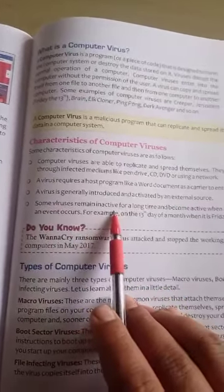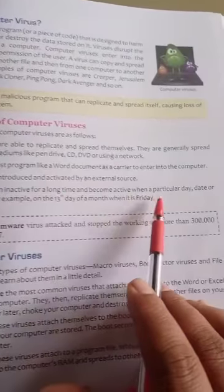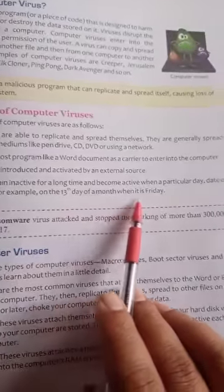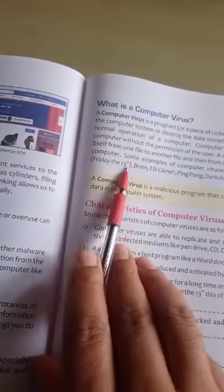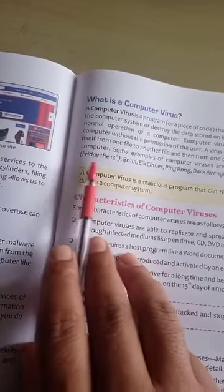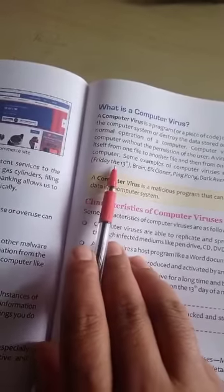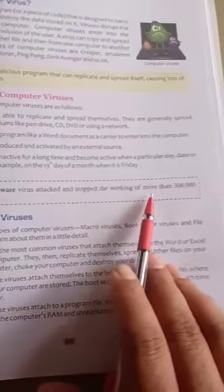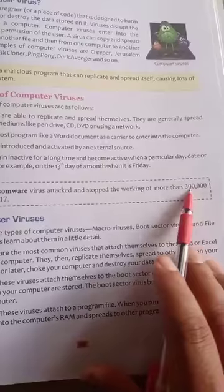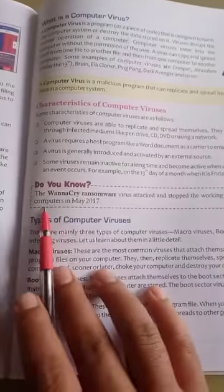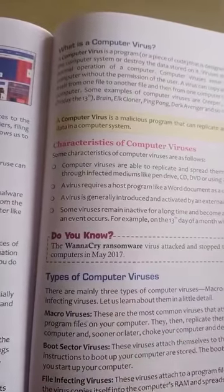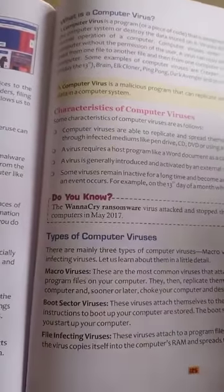A virus is generally introduced and activated by an external source. Some viruses remain inactive for a long time and become active when a particular date or event occurs — for example, the Friday the 13th virus activates on the 13th day of a month when it is a Friday. The WannaCry ransomware virus attacked and stopped the working of more than 30 million computers in May 2017.